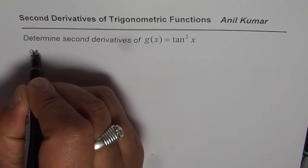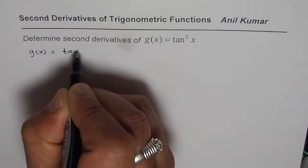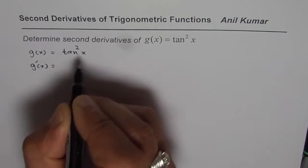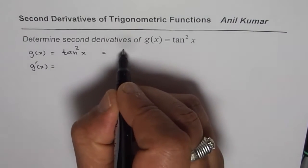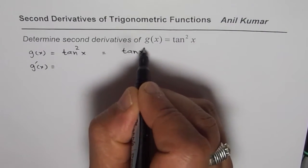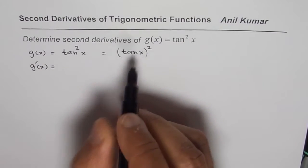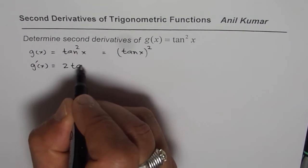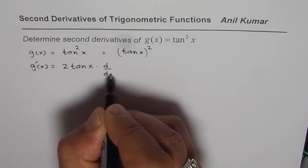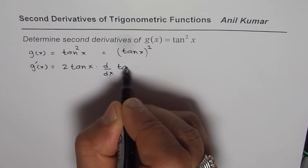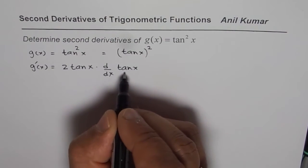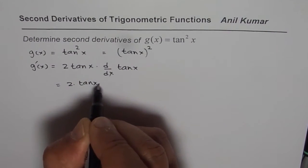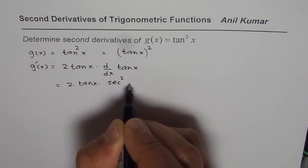We are given g of x equals tan square x. The derivative of g of x will be — we can treat this as tan x whole square. Applying the power rule first, it will be 2 times tan x times the derivative of tan x. Now, derivative of tan x is secant square x, so we write this as 2 times tan x times secant square x.